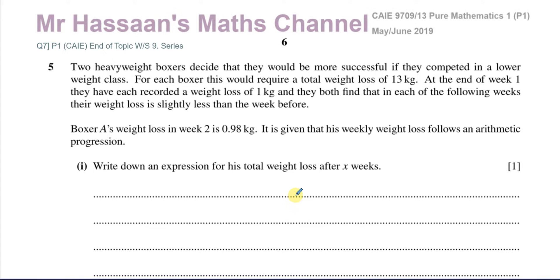Welcome back. This is Mr. Hassan's Maths Channel and I'm now answering question number five from the May-June 2019 Cambridge 9709 Pure Mathematics Paper 1. This is also a question from my endotopic worksheet on series from my P1 collection from Cambridge — question number seven from worksheet number nine on series. This question is about two heavyweight boxers who decide they would be more successful if they competed in a lower weight class.